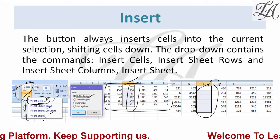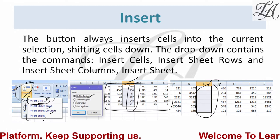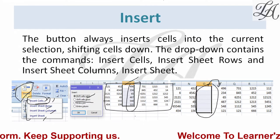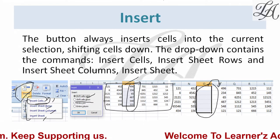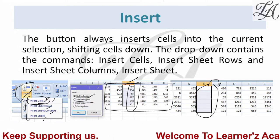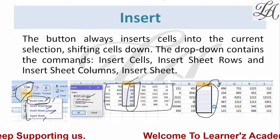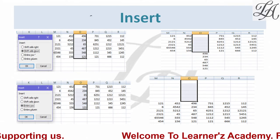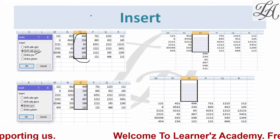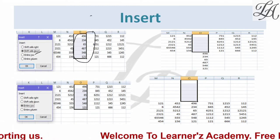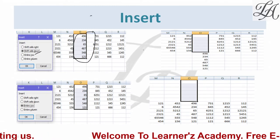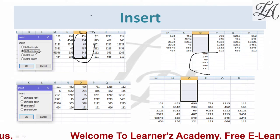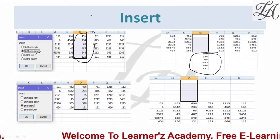Next is Shift Cells Down. In this option, whatever cells you have selected will shift downward, and new cells will be inserted at the top. Let us see — I selected data, clicked this option, pressed OK, and the entire data has shifted down, with new cells inserted above.